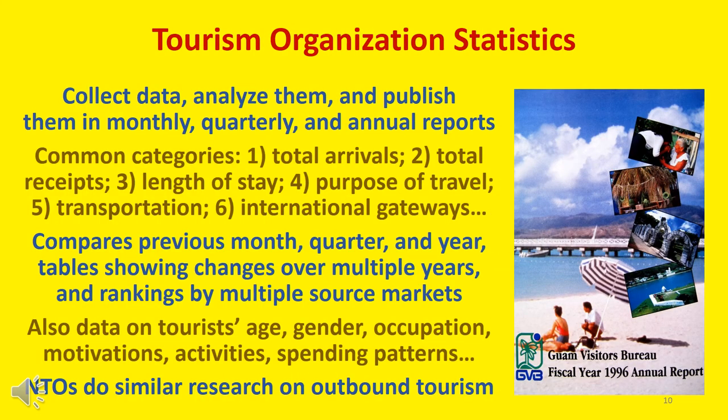Most tourism organizations, ranging from convention and visitors bureaus to national tourist offices, collect data on their destination and then analyze and publish them in monthly, quarterly, and annual reports. Among the most common and useful categories are: total arrivals, total receipts, length of stay, purpose of travel, transportation, and gateways. Most of the data is broken down by timeframes, source markets, and major markets, plus comparisons with the previous month, quarter, and year. Many categories also include data on tourist characteristics such as age, gender, occupation, motivations, activities, and spending patterns.